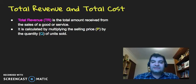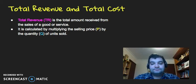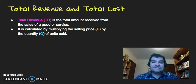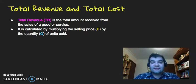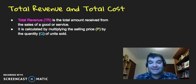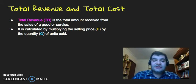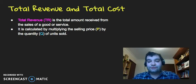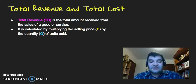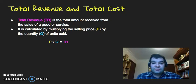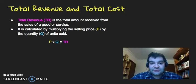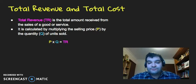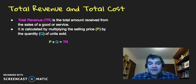One of the ways we're going to look at this is through something called a break-even analysis. One of the elements of the break-even analysis is total revenue and total cost. Total revenue is the total amount received from the sales of a good or service, indicated as TR. The way you calculate it is by multiplying the selling price P by the quantity Q of units sold — so P times Q equals TR, price times quantity equals total revenue.